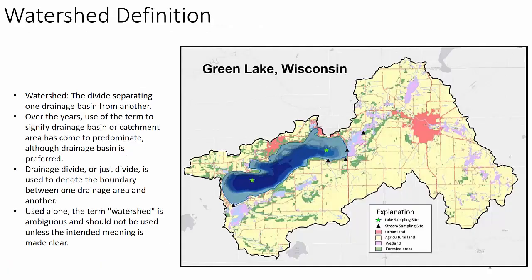The watershed is the divide separating one drainage basin from another. The problem with the term watershed is it's used too generically — it's not adequately defined to be useful for hydrologists. We generally talk about drainage basin or sub-basin. The drainage divide, or just the divide, denotes the boundary between one drainage area and another. Used alone, the term watershed is ambiguous and should not be used unless the intended meaning is made clear.